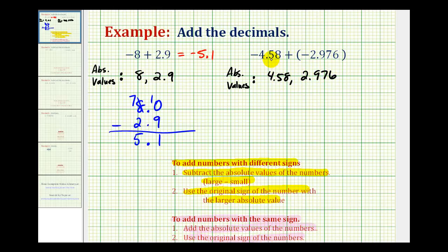Again, because the original numbers have the same sign, we're going to add these this time instead of subtract. So we'll have 4.58 plus 2.976.